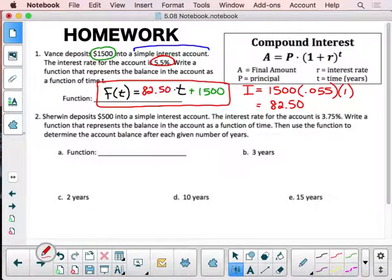Number 2, Sherwin deposits $500 into a simple, again, simple interest. We are, again, not using this up there, please.